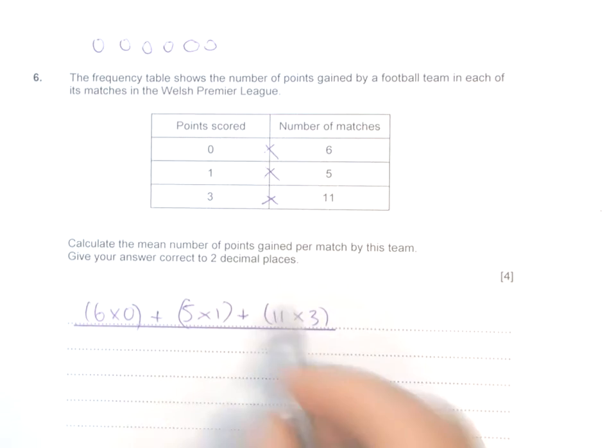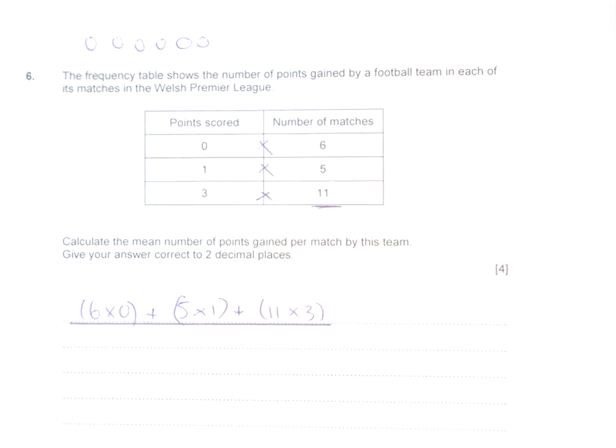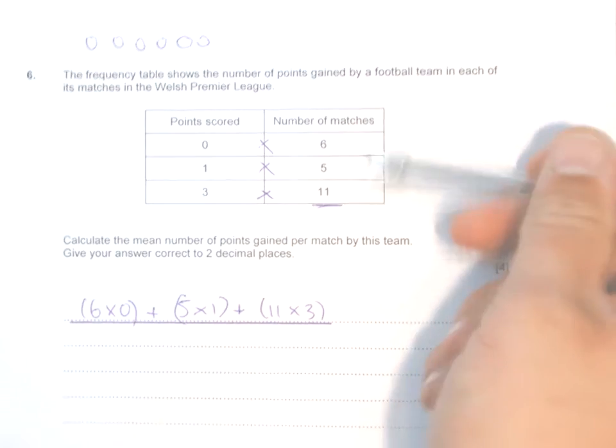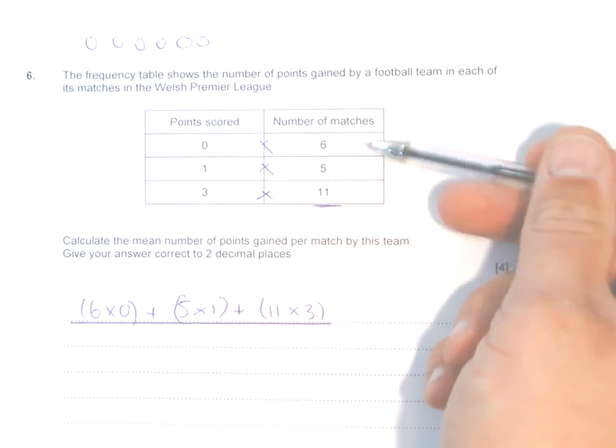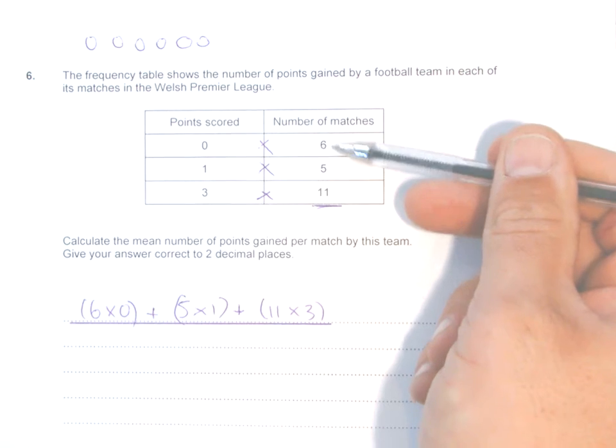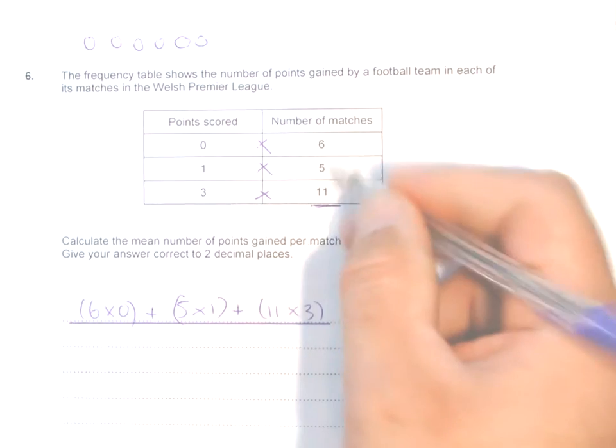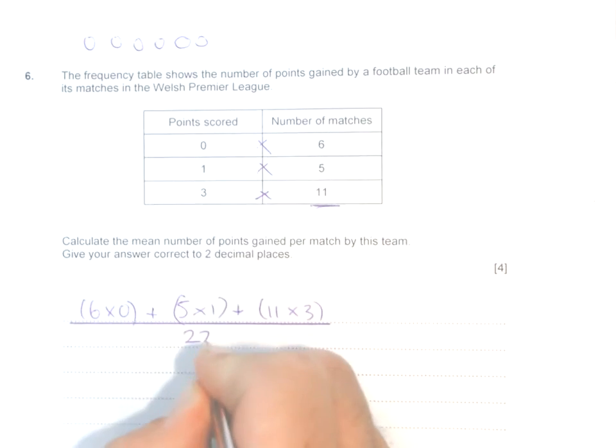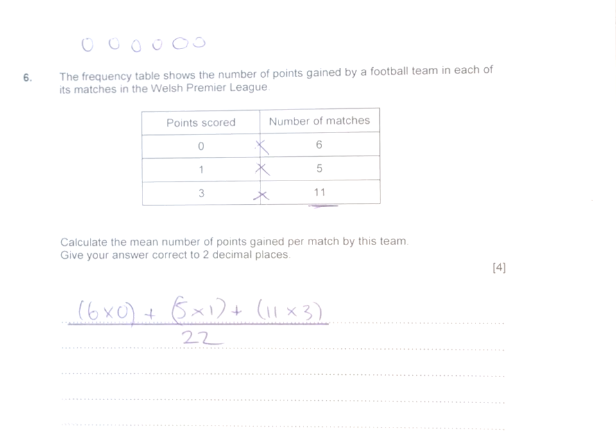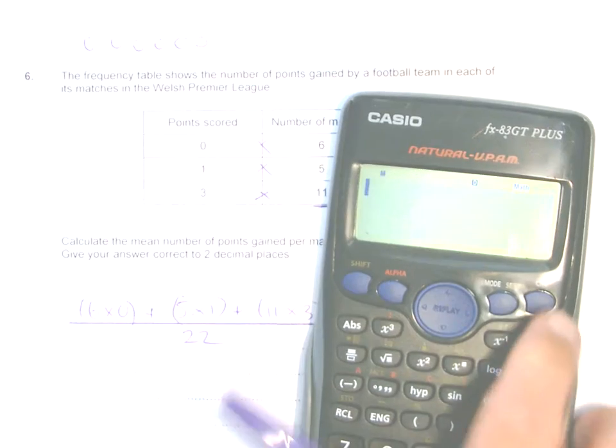This bit is really important because if you get this wrong, you're going to lose all the marks. We're dividing by how many matches there are, not three because there's three rows. If you add up all these matches, that comes to 22.